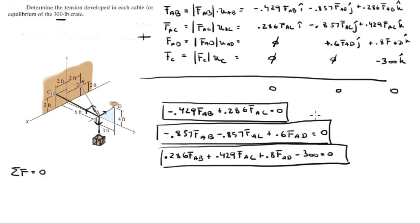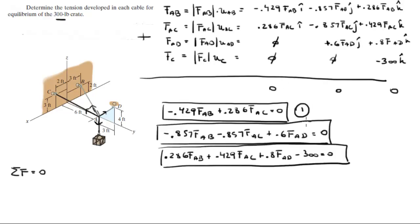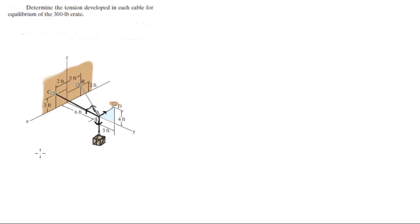We now have three equations and three unknowns: FAB, FAC, and FAD. We can solve this system using algebra. I'll label them Equation 1, Equation 2, and Equation 3 to track the steps clearly.